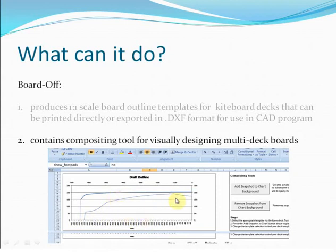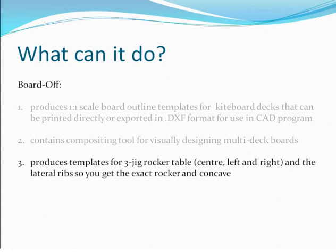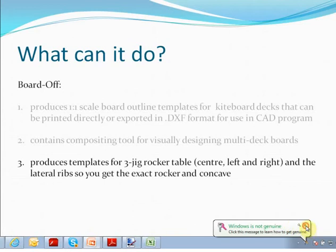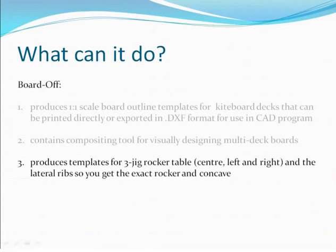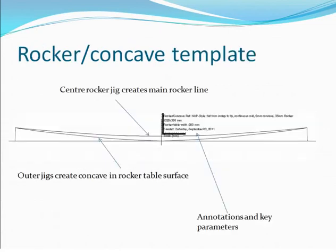It allows you to produce templates for your rocker table. The rocker table design it has in mind is one where you have the jigs laying down the side and then along the centre, and the rocker table surface is clamped or screwed over the top. It's also quite easy to take those measurements you would need for your adjusters if you're working with an adjustable rocker table. The top one is your centre jig, and the one on the outside is the jig that will ensure your rocker table surface curves through the right amount to give you the amount of concave you want at the side of your board.